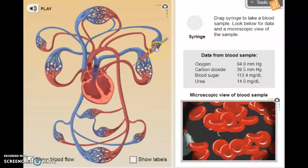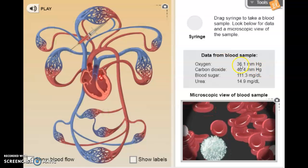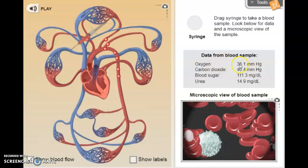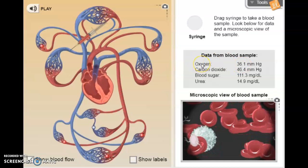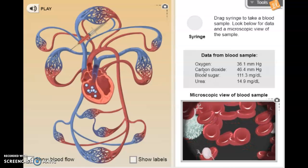If I now move the syringe to something blue, we will see those numbers change dramatically, going from a 90 something to 36 on oxygen. So there's less oxygen in that blood, which doesn't make it blue but it does change the color.